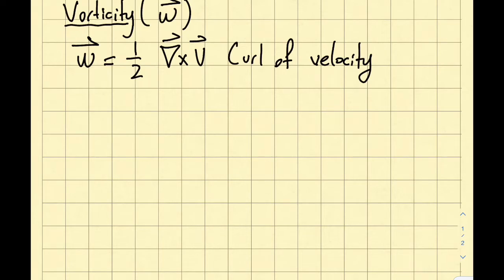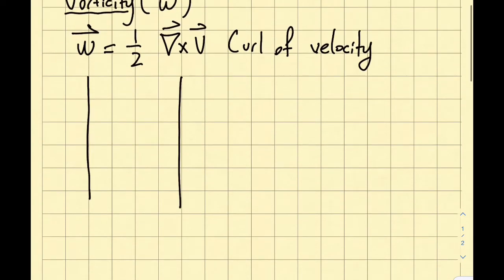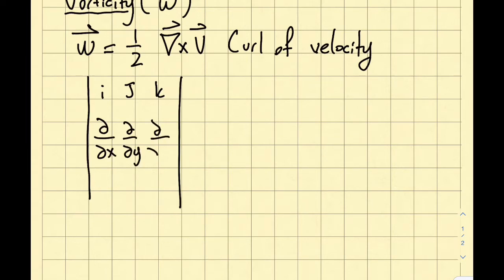I'll explain what the curl of velocity is since I haven't covered this before. I'll write a matrix where the first row has i, j, and k; the second row has del/del x, del/del y, and del/del z; and the third row has u, v, and w. This is what is meant by the curl of velocity.